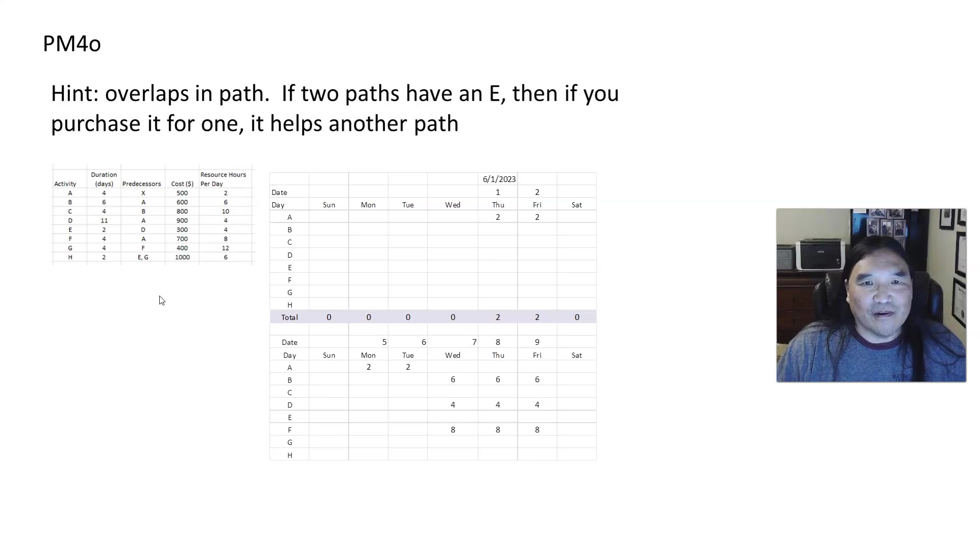It also asks you to do a resource table. A resource table, you could actually do it either way. You network diagram. Anyway, here's the example. A is four days and two resource hours. So they tell you it starts June 1st. They don't work weekends. So two, two, two, two, four days, two hours each. If I had to do this backwards, A goes four hours. Now what follows A? We see the B does. We see the D does. We see the F does. Now you could do it one activity letter at a time, or you could do it according to precedence.